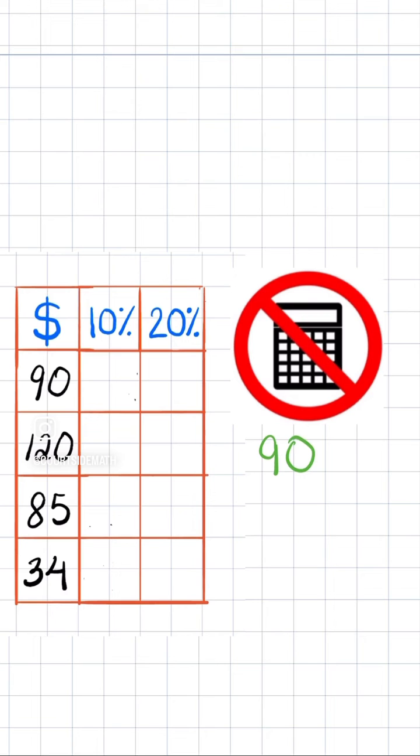So if our check was $90, 10% of that we calculate by moving that decimal one space to the left to give us $9. Now 20% is just double 10%, so we can just double that $9 to get $18, and $18 would be 20% on a $90 check.